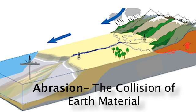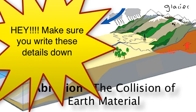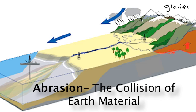Next we have abrasion, which simply means the collision of earth material — rocks, minerals, anything like that. Glaciers cause abrasion because they hold a lot of rocks, and as those glaciers move downhill due to gravity, the rocks within them grind against the mountain rocks. If the glacier melts or rain forms a river down the mountain, that running water carries earth material and causes rocks to slam into one another as it cascades down.